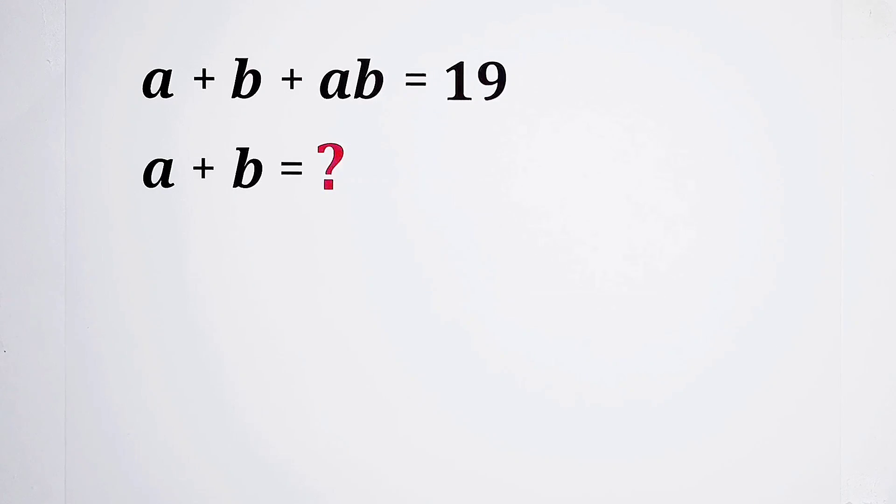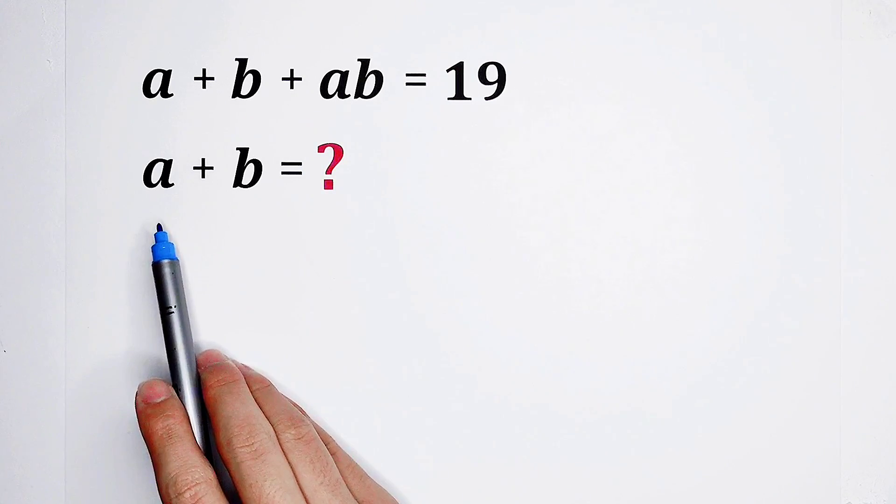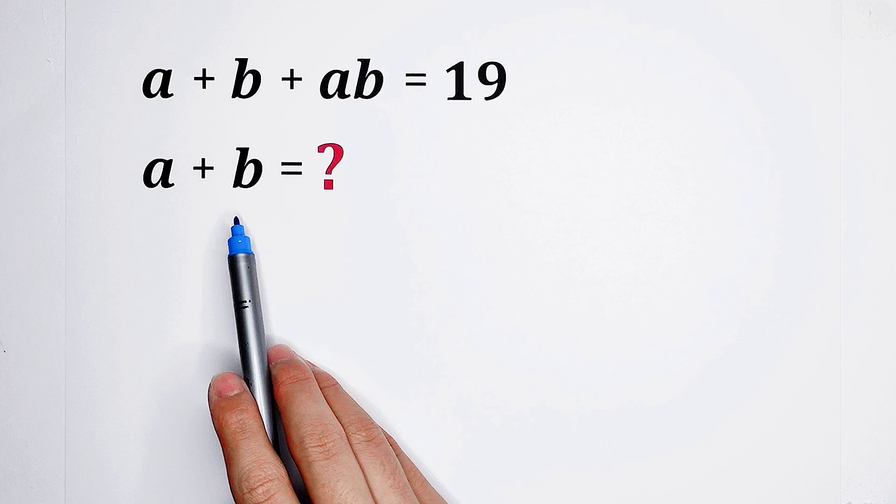A fantastic algebra question. A and B are positive integers. A plus B plus AB is 19. What is the value of A plus B? How wonderful the question is. How shall we solve it?